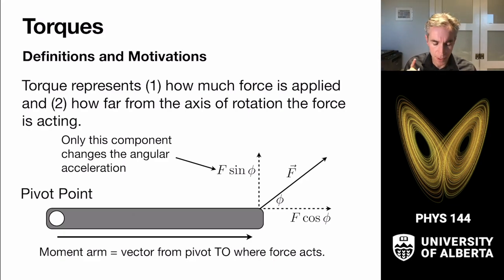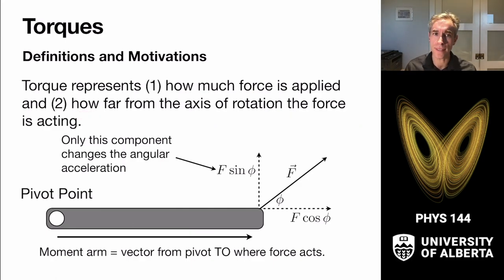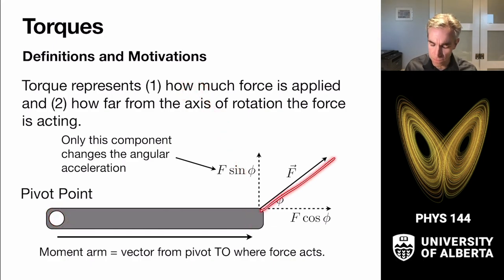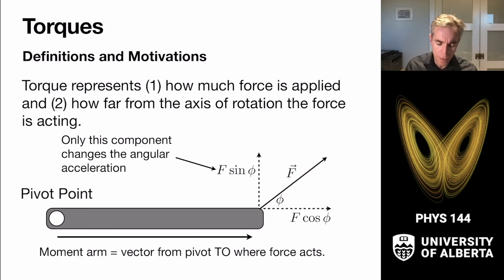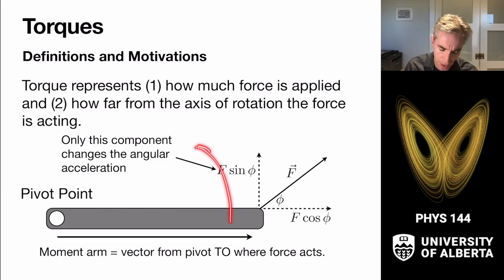A torque needs a description of something that creates an angular acceleration, and it depends on two things. A force is just kind of a force, but a torque actually depends on how you look at a system. A torque represents how much force is applied to an object that's going to rotate, and how far from the axis of rotation that force is acting. If we think about a door or hinge rotating around a pivot point and we exert a force on that object, it's going to rotate. But only one component of the force is going to change the angular acceleration.